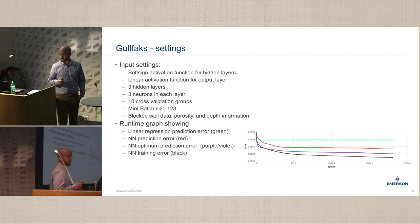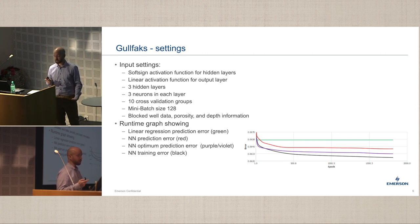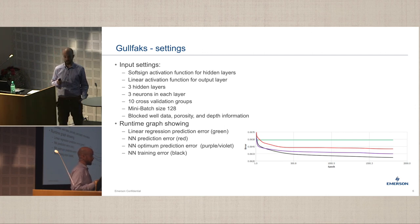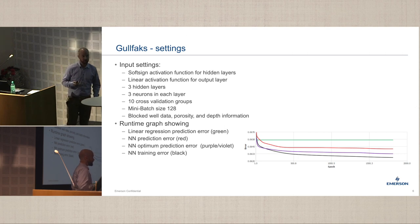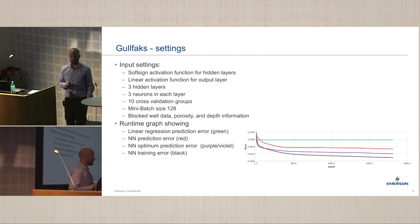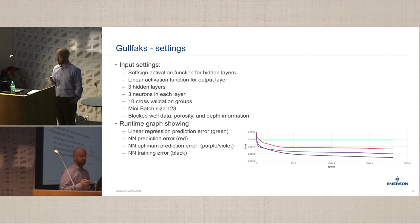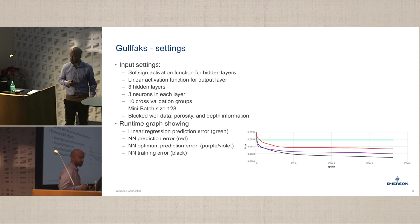The input settings for Gullfaks: SoftSign activation as mentioned, linear activation function for the output layer. We only had three hidden layers and three neurons in each layer. Given the amount of data we had, increasing this number turned out to be too many degrees of freedom — the results ended up all over the place. We found the best result too fast and then the errors mounted up pretty fast. We did ten cross-validation groups with a mini-batch size of 128.